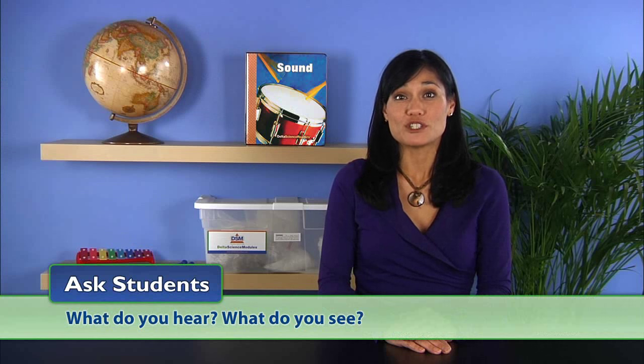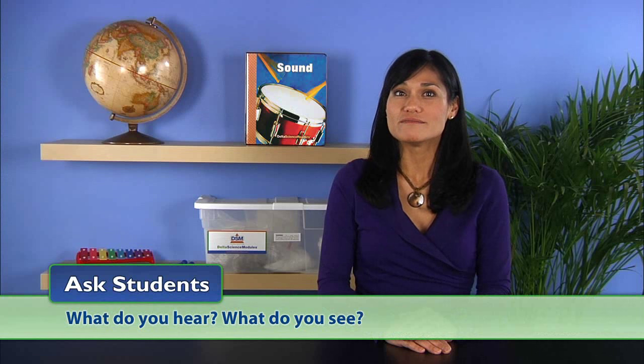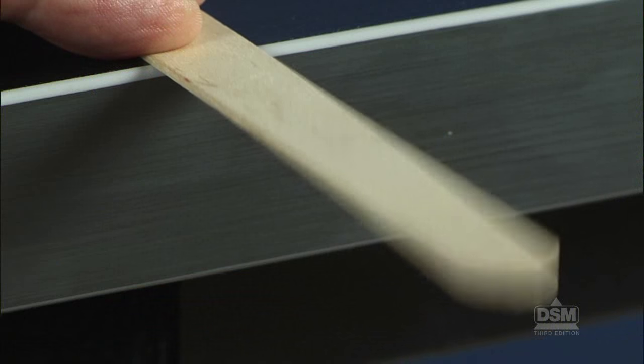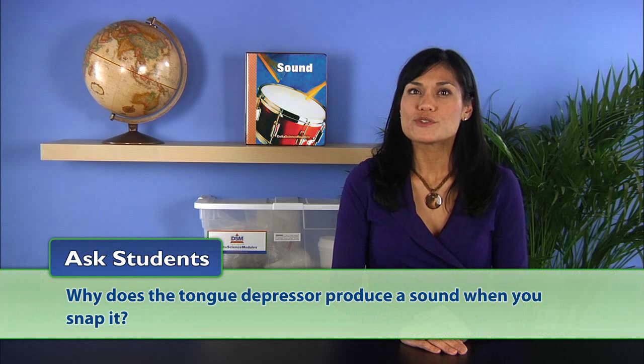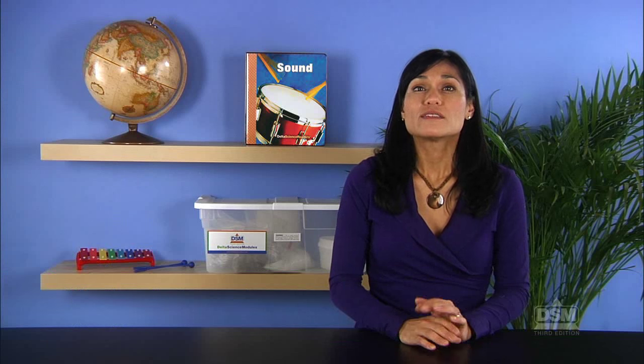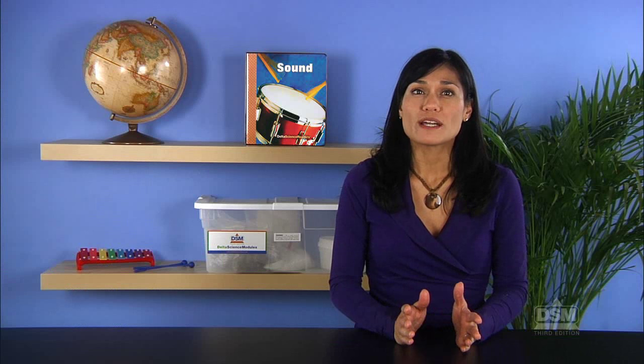Allow the students to snap the tongue depressors and ask, what do you hear? What do you see? They will hear a thud followed by a reverberating twang and they should see that the part of the tongue depressor that hangs over the edge vibrates. Then ask students, why does the tongue depressor produce a sound when you snap it? The student should understand that its vibrations produce sound waves that travel through the air and reach our ears.